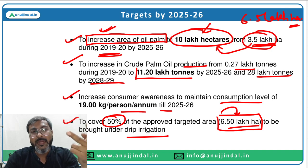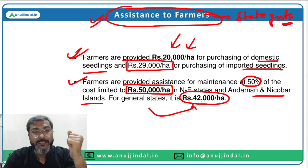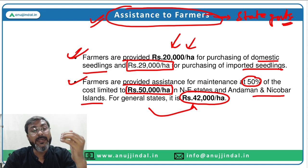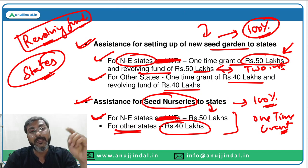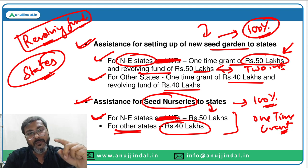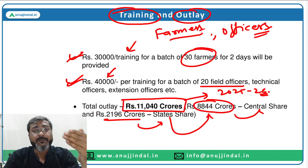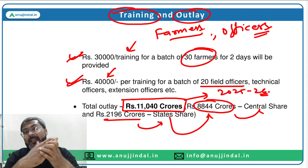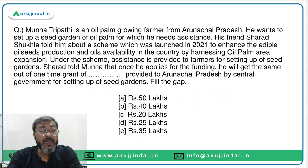Crude palm oil production target is 11.20 lakh tons. Consumption target is 19 kg per person per annum. 50% of targeted area to be under drip irrigation. Assistance to farmers: domestic seedlings Rs. 20,000 per hectare; imported seedlings Rs. 29,000 per hectare; maintenance Rs. 50,000 per hectare for Northeastern states and Andaman & Nicobar Islands, and Rs. 42,000 per hectare for general states. Seed gardens: Northeastern states — one-time grant of Rs. 50 lakh and revolving fund of Rs. 50 lakh; other states — Rs. 40 lakh each. Seed nurseries: Northeastern states Rs. 50 lakh; other states Rs. 40 lakh. Total outlay is Rs. 11,040 crores.